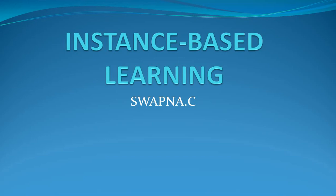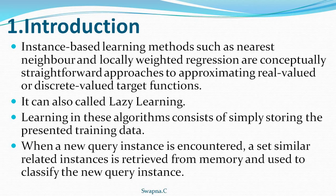In this topic we will cover the introduction, advantages, and disadvantages. Instance-based learning methods include nearest neighbor and locally weighted regression. These are conceptually straightforward approaches and they can approximate real-valued or discrete-valued target functions.